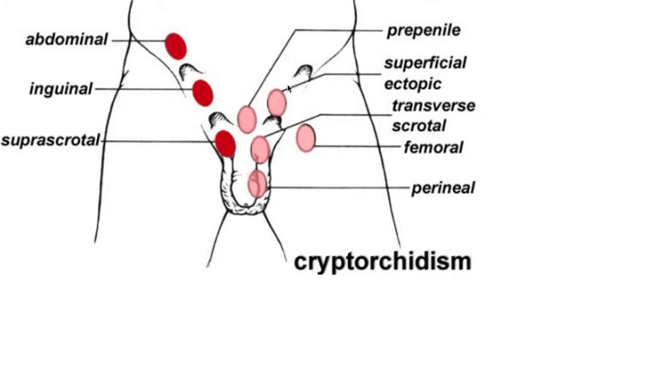This is mostly found in premature males. Normal descending testes is at the 7th to 9th month of gestation.